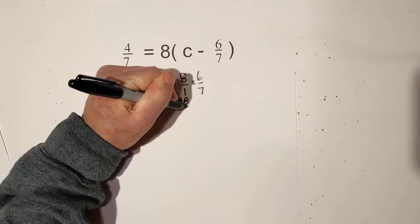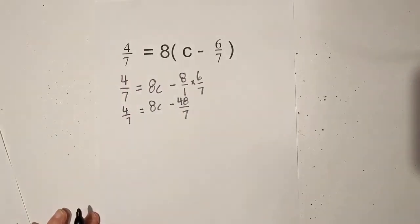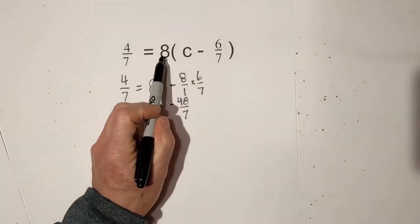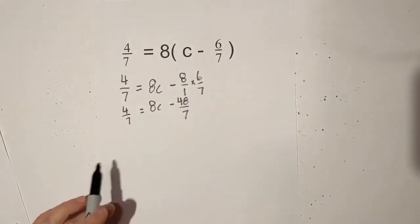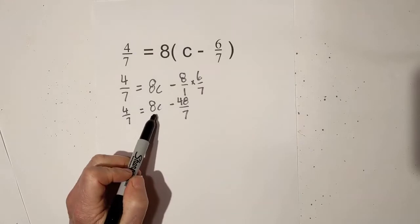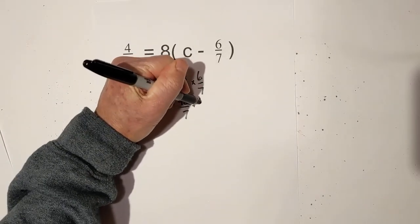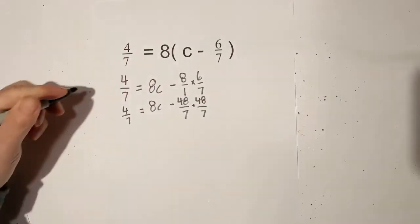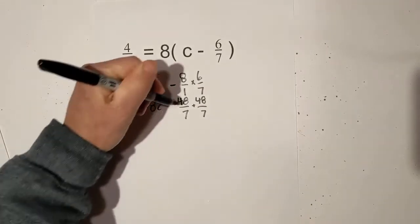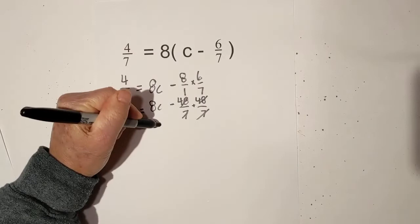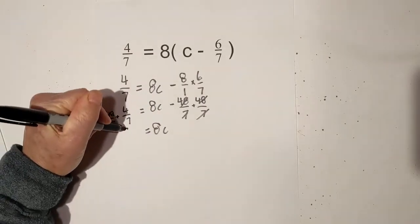So that becomes a negative 48 sevenths equals four-sevenths. Make sure you can see that - don't multiply the eight times the six and eight times the seven, but it's eight over one times that. Now what do we do next? We want to try to get the variable by itself. So we're going to add 48 sevenths to both sides. So I'm going to add 48 sevenths here, and so I will add 48 sevenths here. These cancel. So I bring down eight c is equal to 48 plus four, that gives me 52 sevenths.